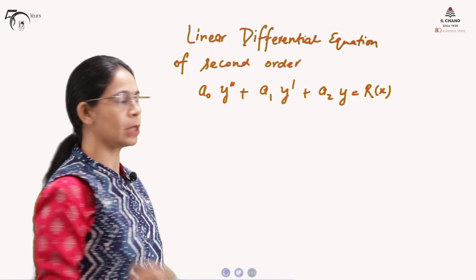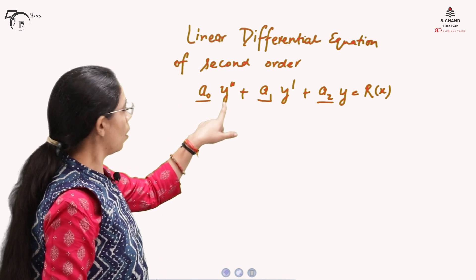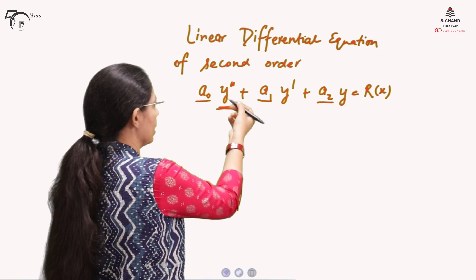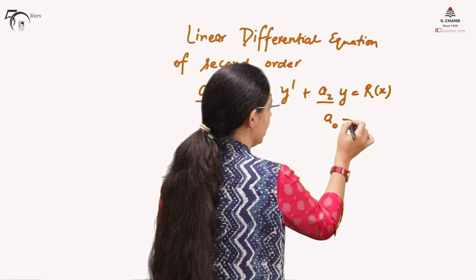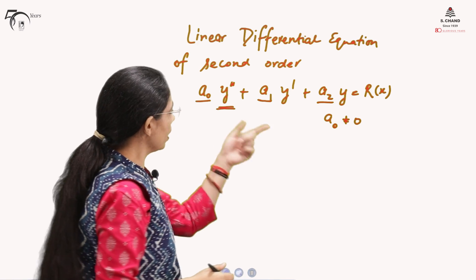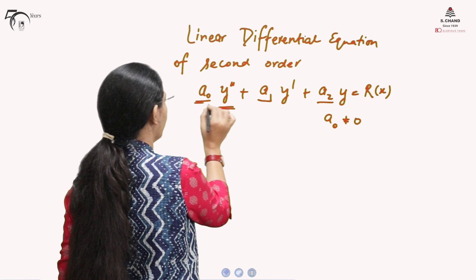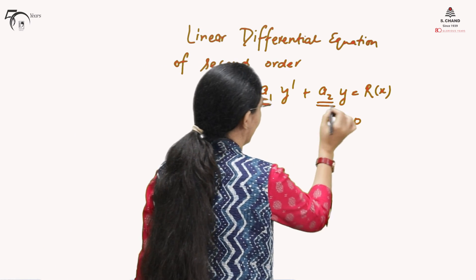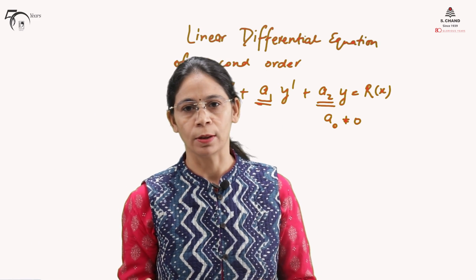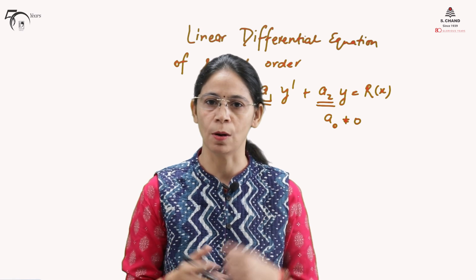Now, here we are not putting any restriction on A0, A1, and A2. Since the highest order derivative involved is 2, therefore it is called a second order differential equation. And if it is a second order differential equation, then A0 cannot be 0, because otherwise the order will be reduced. Here, A0, A1, and A2 can be functions of x, or they can be constants. All of them may be functions of x, some may be functions of x and some may be constants, and all may be constants.